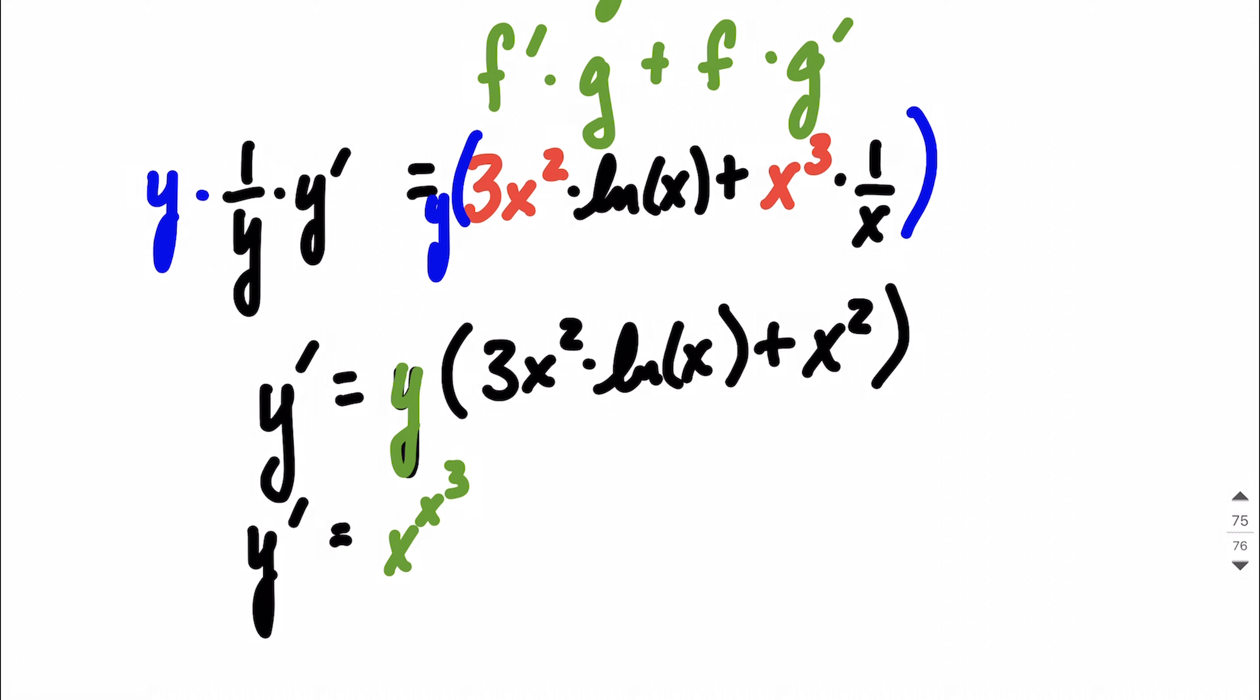The next thing we can do is, as we're thinking about maybe simplifying a little bit, I noticed that we have a common factor of x squared and x squared between these two terms. We can factor that common factor out. So this will be multiplied by x squared.